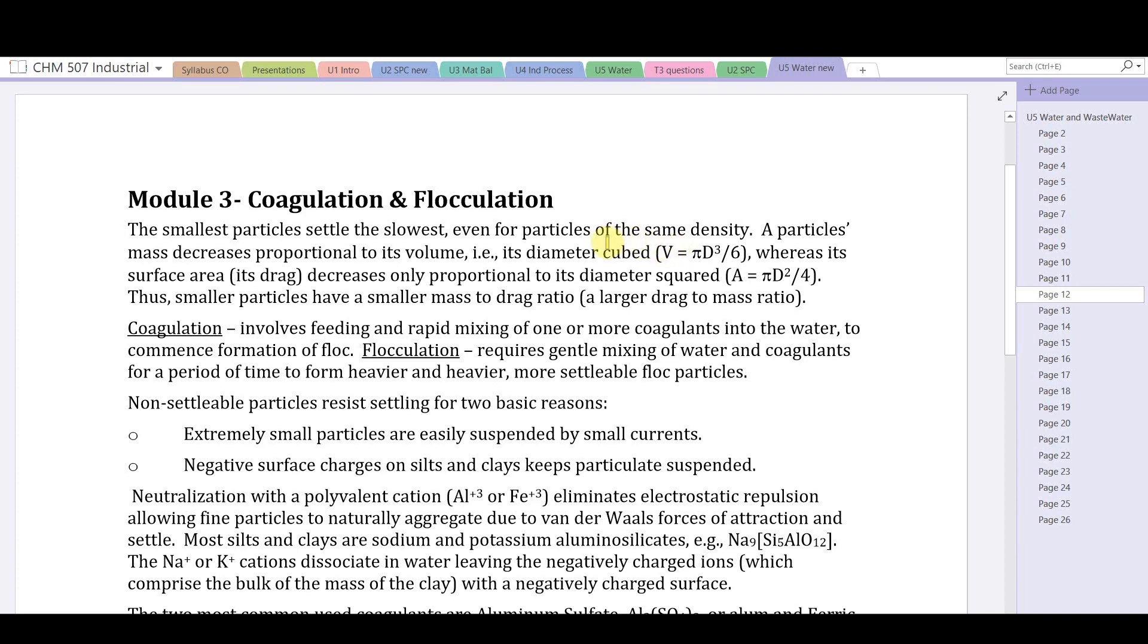Its mass would be eight times smaller as well. Compare that with the surface area of a particle - surface area affects its drag, the resistance to falling. For surface area it's proportional to diameter squared. For a sphere, the area is equal to πD²/4. If we consider our original particle and then our particle that has a diameter twice as small, its area is four times smaller, not eight times smaller like the volume.